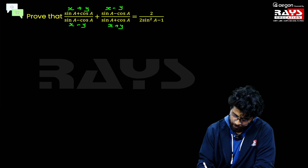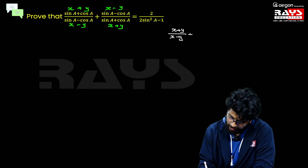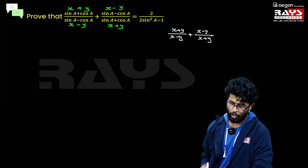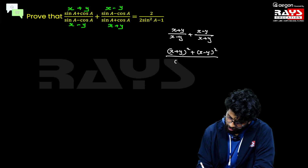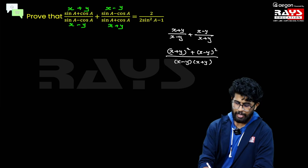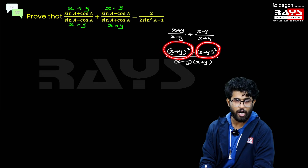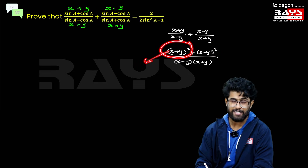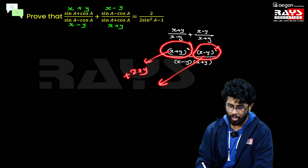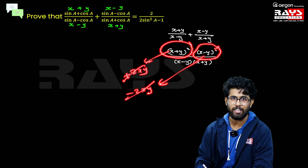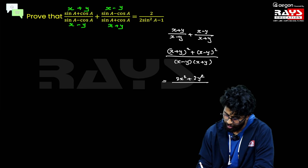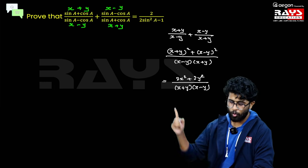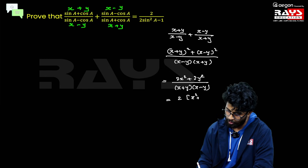In the LHS we have (x + y)/(x − y) + (x − y)/(x + y). Cross multiplying gives us [(x + y)² + (x − y)²] divided by [(x − y)(x + y)]. Expanding: (x + y)² = x² + y² + 2xy and (x − y)² = x² + y² − 2xy. Adding both, the 2xy terms cancel, leaving 2x² + 2y² in the numerator. Taking 2 common: 2(x² + y²) divided by (x + y)(x − y), which equals x² − y².